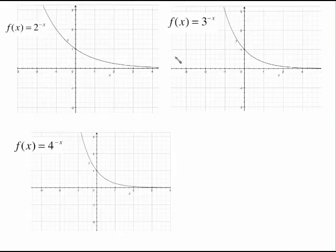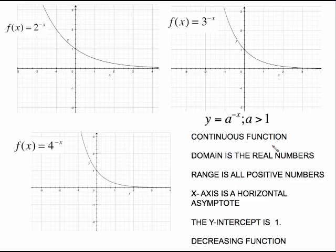Here are all of the ones done with the graphing calculator to show you same idea. 2 to the negative x, 3 to the negative x, 4 to the negative x. Here's all the generalities about these kind of graphs. It is continuous. The domain is the real numbers. The range is all positive numbers. The x-axis is the horizontal asymptote. And the y-intercept is 1. All of this is the same stuff that was true on the other screen when we were just talking about a to the x. The only difference is this is a decreasing function. So from left to right, this function is decreasing. But everything else is the same as the other function.